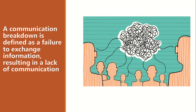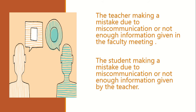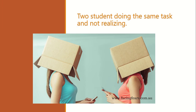To make it clearer, here are some common examples of how a communication breakdown in school can happen. A teacher making a mistake due to miscommunication or not enough information given in a faculty meeting. A student making a mistake due to miscommunication or not enough information given by the teacher. Or two students doing the same task without realizing it.